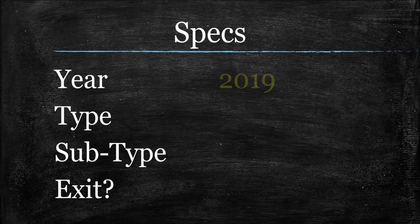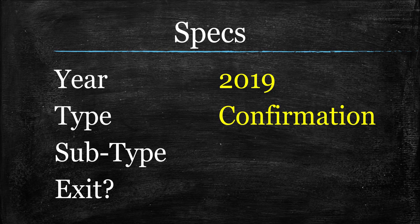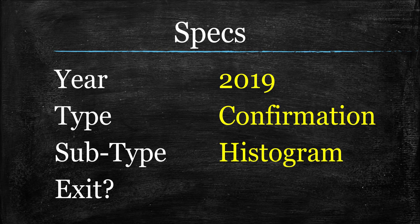The year is going to be 2019, and this is another one I have never heard of up until recently when we started getting into things. This is going to be a confirmation indicator. The subtype I would really call it a histogram more than anything — probably a zero cross or midline cross, but it's histogram heavy. You'll see it in a moment. And as far as exits, I don't like it for that, but feel free to try. Let's go ahead and look at it.